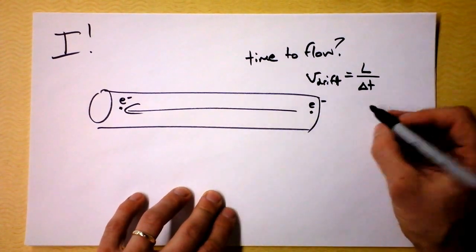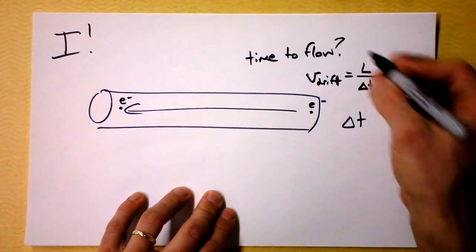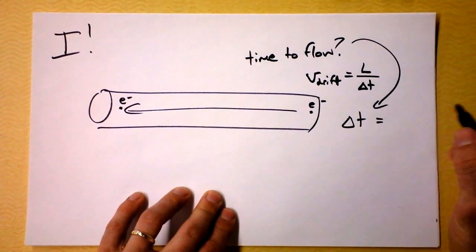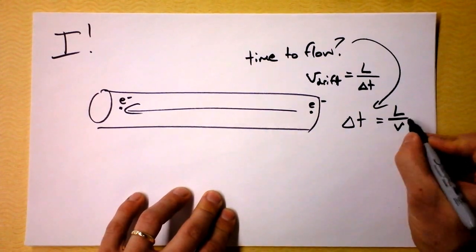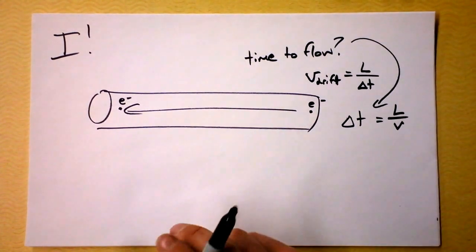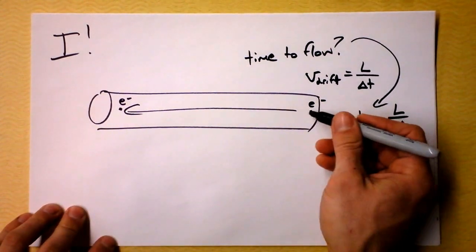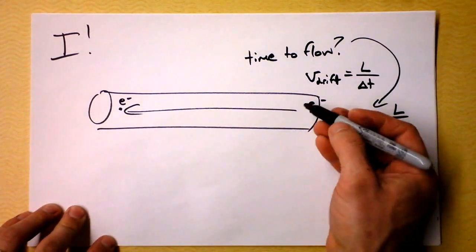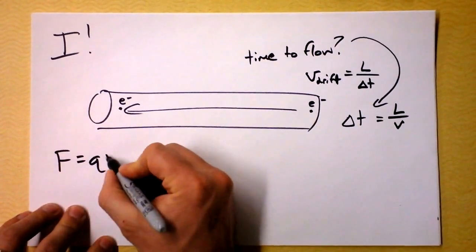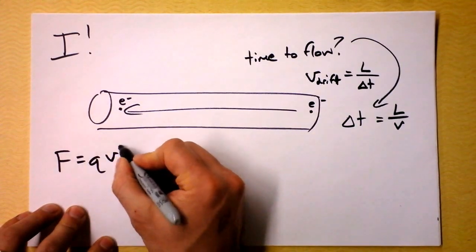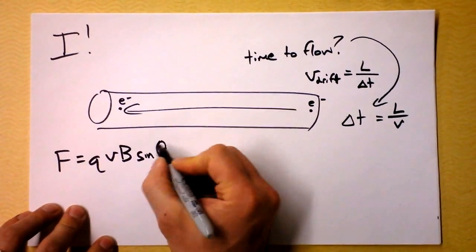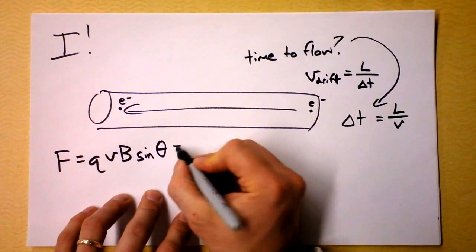So I'm going to call the time that it takes to flow simply the length of the wire divided by the velocity of the electron. And I know that there's a force on this electron as it's moving that direction because of the current. And that force is q times v times b times the sine of theta, as we just established a moment ago.